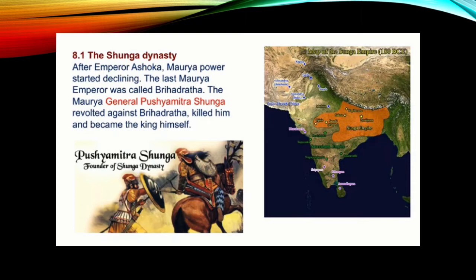Starting with the first one: the Sunga Dynasty. After Emperor Ashoka, Maurya power started declining. The last Maurya emperor was called Brihadrata. The Maurya general Pushyamitra Sunga revolted against Brihadrata, killed him, and became the king himself. That is how the Sunga Dynasty came into power.